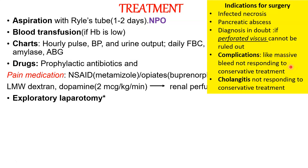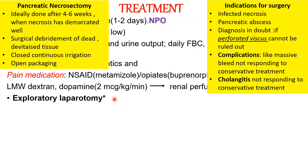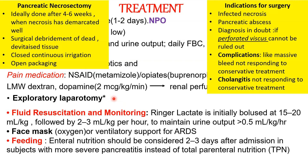In pancreatitis, surgical debridement — pancreatic necrosectomy — is done after four to six weeks and involves closed continuous irrigation and open packing. The most important treatment measure is aggressive fluid resuscitation; Ringer's lactate is preferred but normal saline can also be used. The patient should maintain a urine output of more than 0.5 mL/kg/hour. A face mask or ventilatory support may be given if there is respiratory distress. After one to two days of nil per oral, early enteral nutrition can be started.